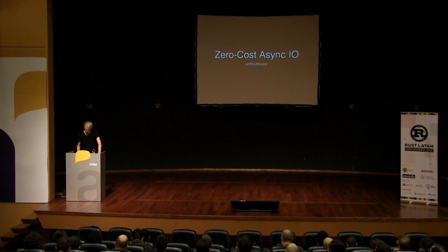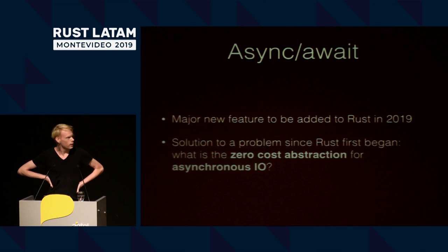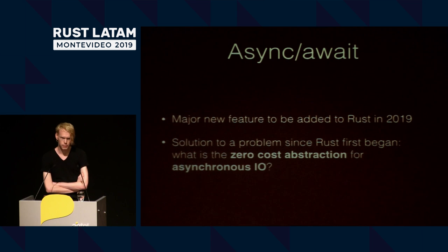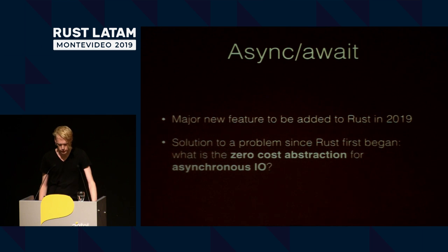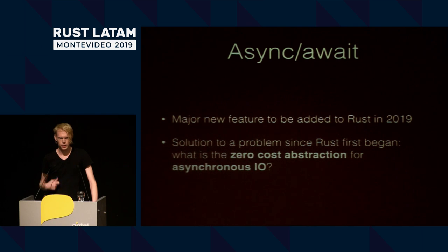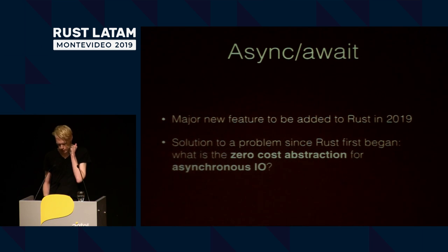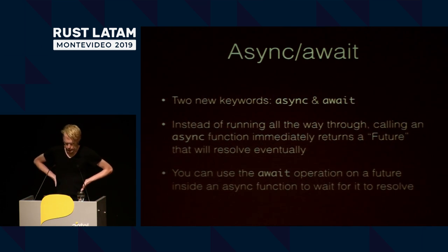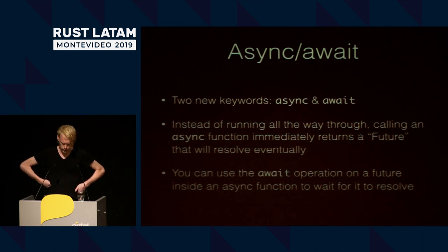The feature that I've been working on is this thing called Async Await. It's going to be probably the biggest thing that we do in the language this year. We're planning to ship it sometime in the next few months, and it's the solution to this problem that we've been struggling with for a really long time, which is: how can we have a zero-cost abstraction for asynchronous I/O in Rust?